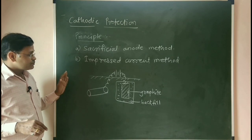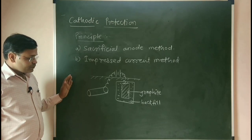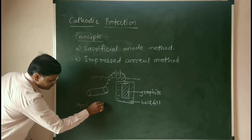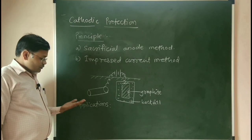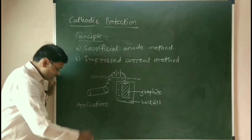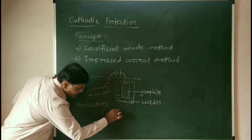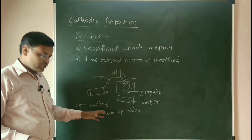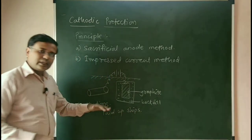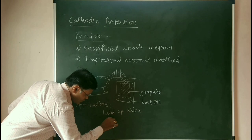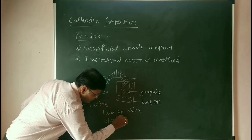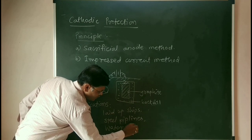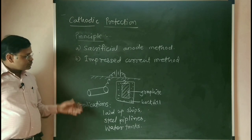This is the main concept behind the impressed current method. Its applications include corrosion prevention of laid-up ships — ships that are laid up at the coastal area — buried steel pipelines, and water tanks.